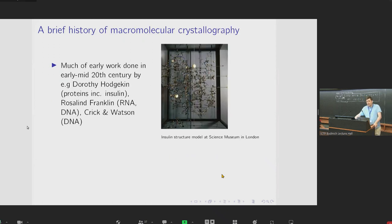Much of the early work in macromolecular crystallography was done in the early to mid-20th century by researchers including Dorothy Hodgkin, who studied proteins including insulin, and by Rosalind Franklin, who looked at RNA and at DNA, and obviously by Crick and Watson, who studied DNA.